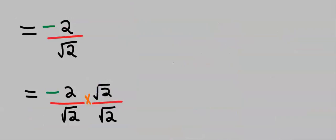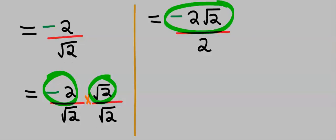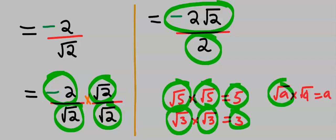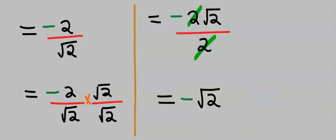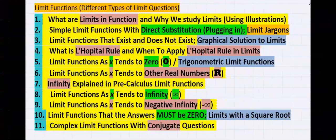We rationalize by multiplying both numerator and denominator by √2. −2 multiplied by √2 gives −2√2, and √2 multiplied by √2 gives 2. The 2 cancels, and the final answer is −√2. From the options, our answer is A.